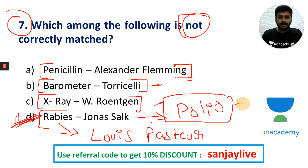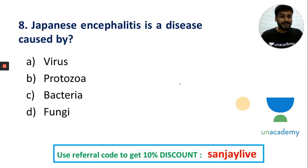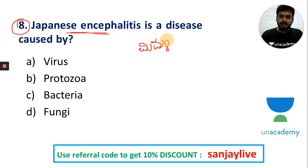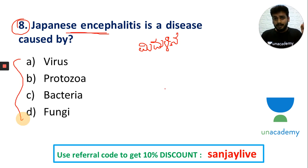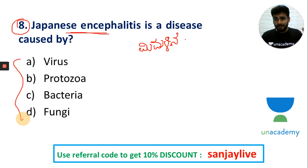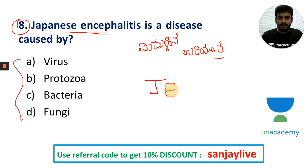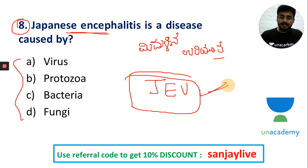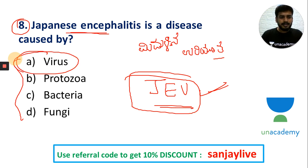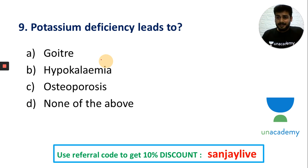Japanese encephalitis is caused by a virus — similar to the corona virus. It causes middle ear and neurological problems. Japanese encephalitis is a virus, confirmed — it is not a bacterium.